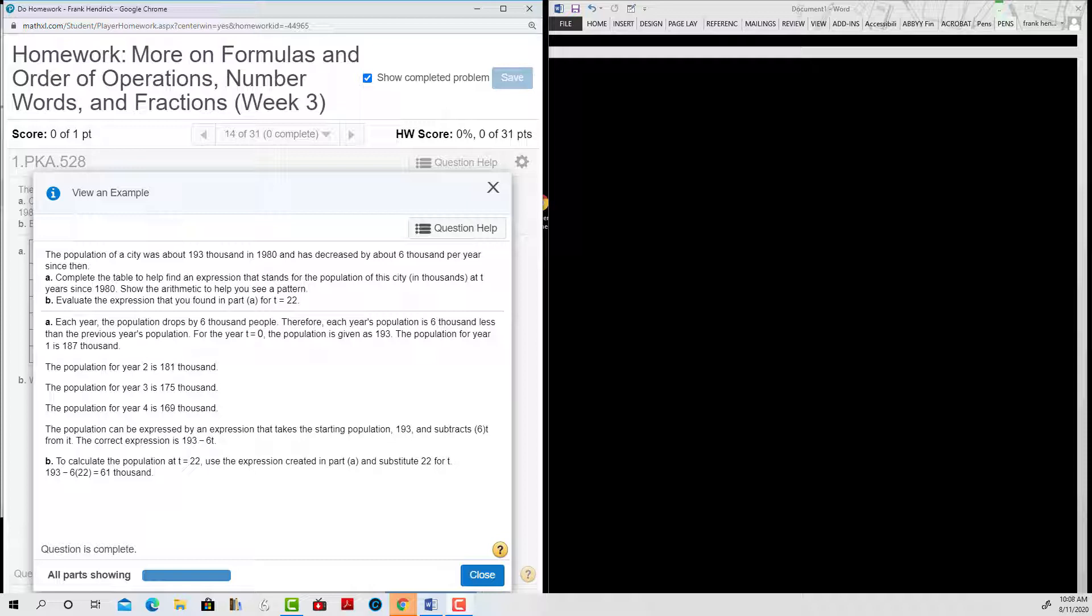So in that first year, we let t equals 0 for that first year. Their initial salary, the population was 193,000.